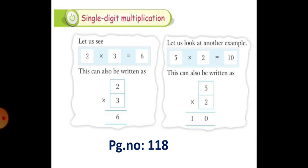So there is a concept, single digit multiplication. Let us see. 2, 3's are 6. So this can also be written as 2 into 3 is equal to 6.